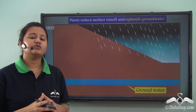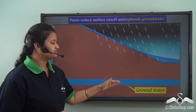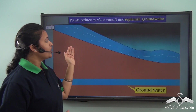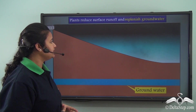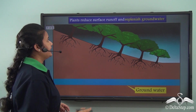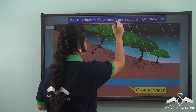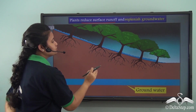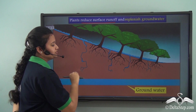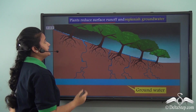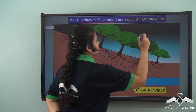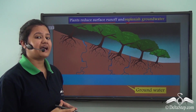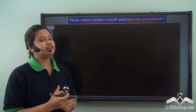Another way of conserving water resources is to refill the ground water table. This can be done by planting trees on bare ground. Plants bind the soil together and prevent surface runoff, and the water collected seeps through the soil to refill the ground water table. Thus plants reduce surface runoff, replenish ground water, and help protect the environment.